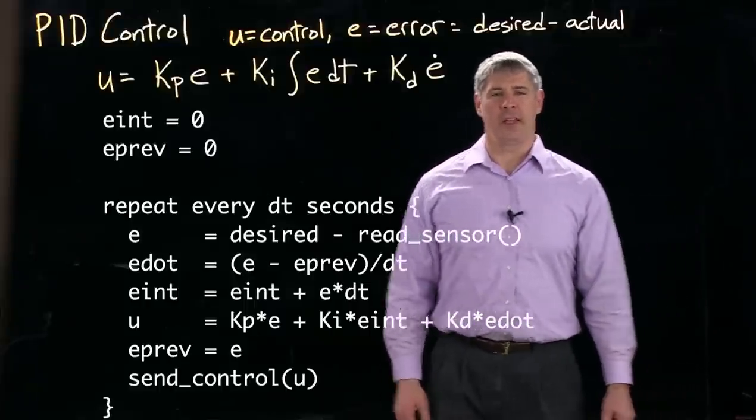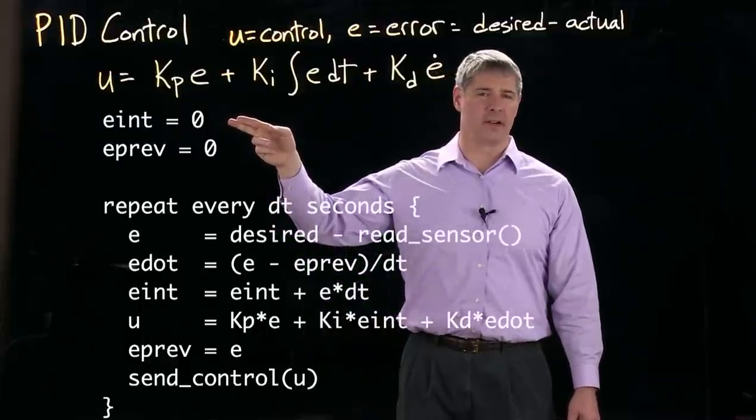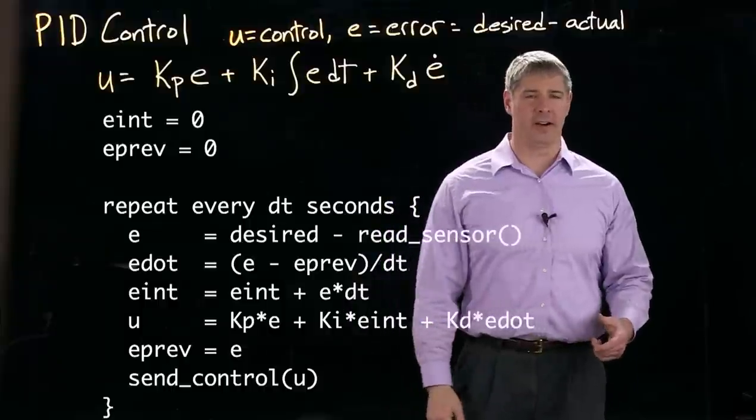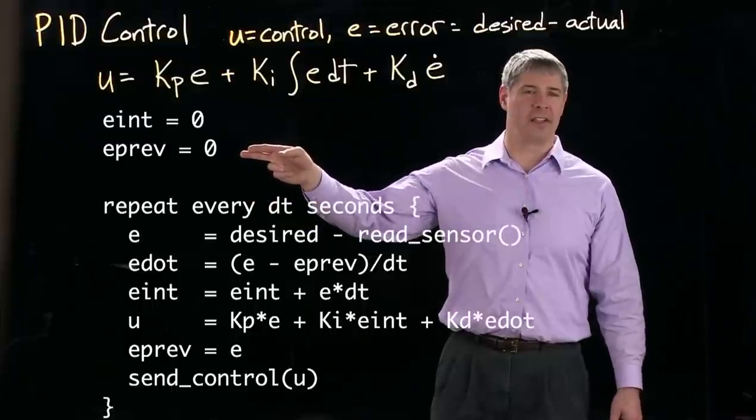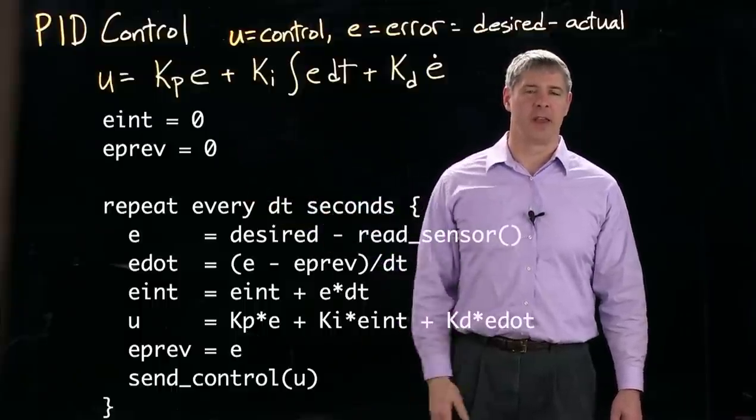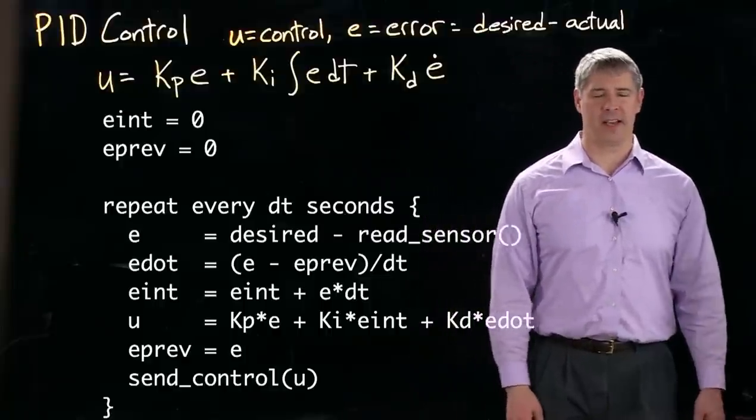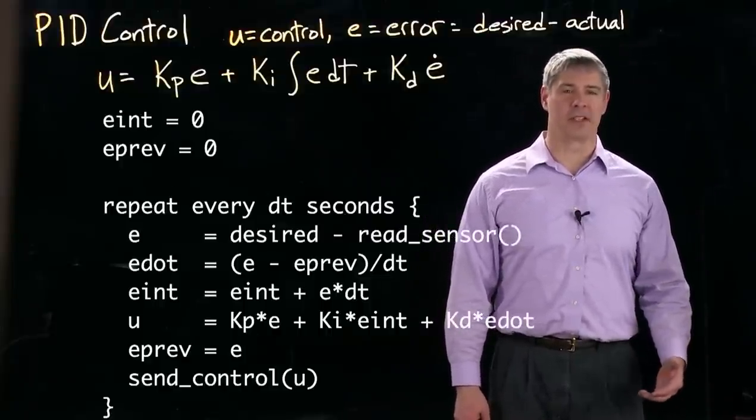So first we initialize the value of the integral of the error. We initialize it to zero. And we're going to differentiate numerically the error currently from the previous error. So we're going to initialize the previous error as zero. And now we go into this control loop that gets executed every dt seconds. So typically for motor control, that might be every one millisecond, for example.